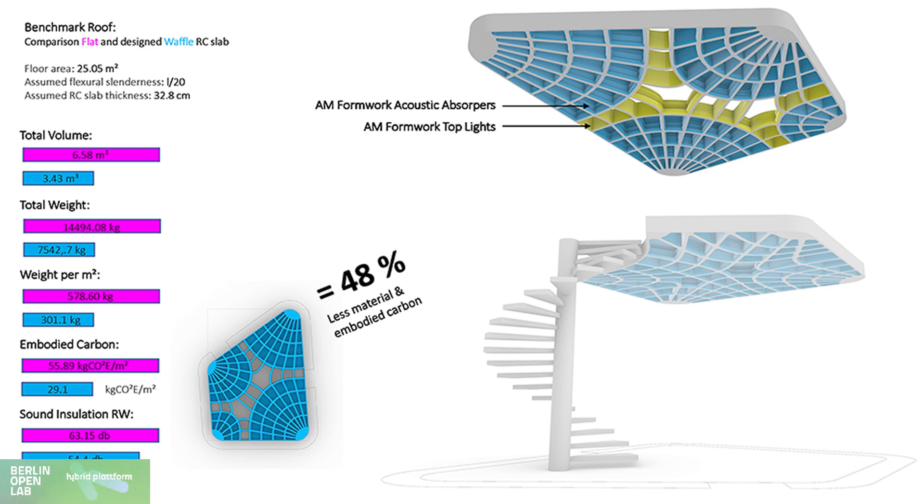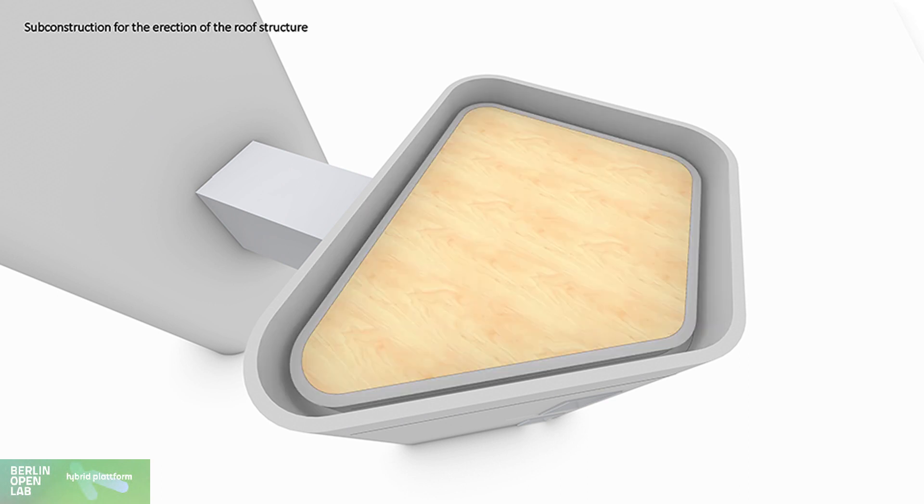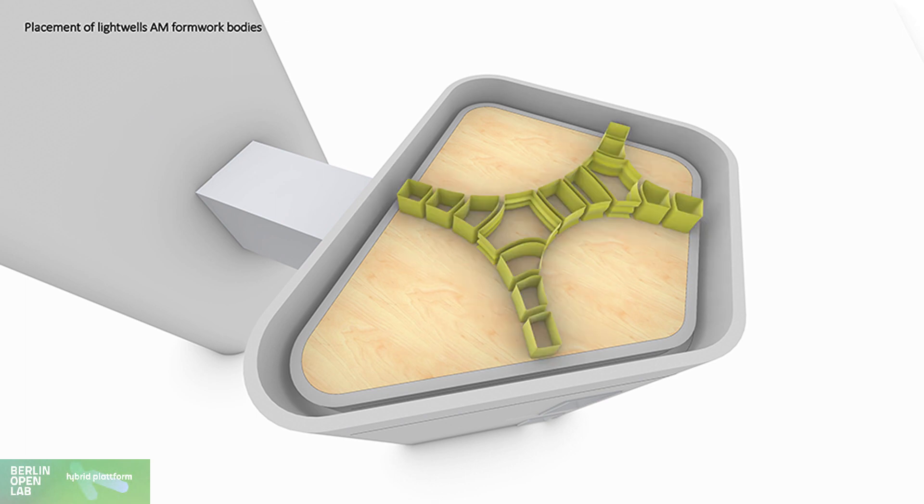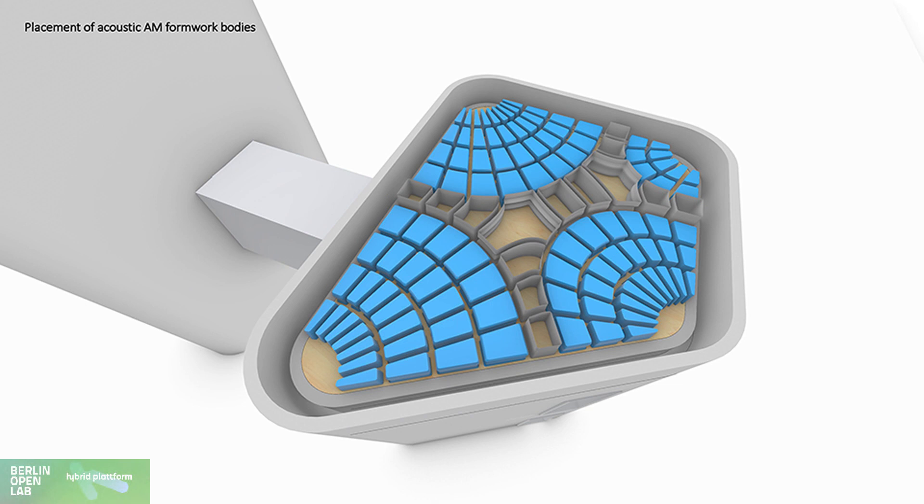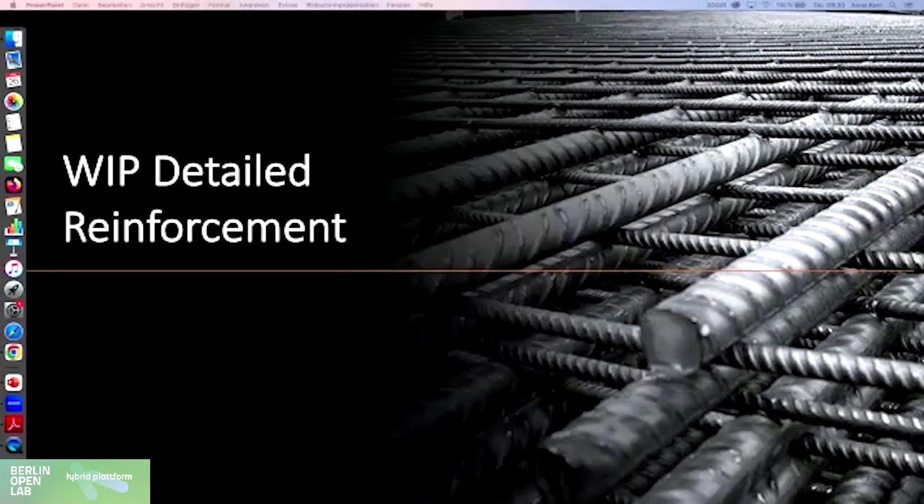We introduced two types of formwork bodies. One is our acoustically implemented absorbers and the other one would be light wells because the space is enclosed with no windows, so it would be nice to have some light in the space. This shows how we imagine this could be built. You do first analysis structurally looking at the gridding of the system, then you have your walls that are 3D printed. You introduce formwork on which the additive manufactured formwork will be placed. First you have your light wells, then your acoustic bodies.